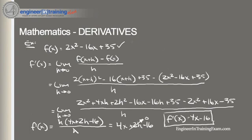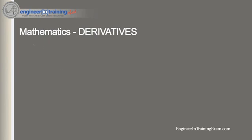Taking limits to find the derivative of a function can be very tedious and complicated as you see in this process. For the most part, we probably won't need to during the exam. Luckily, we have general formulas or rules that make differentiating much easier, as well as a bunch of tables in our reference manual given during the exam. Let's go over the most general rules of derivatives. The constant rule simply states that if a function is a constant function where f of x equals c, then that derivative is equal to 0.